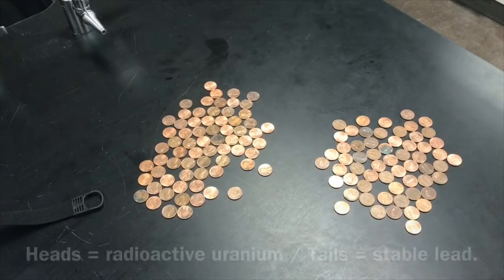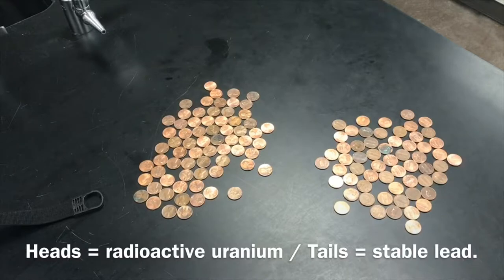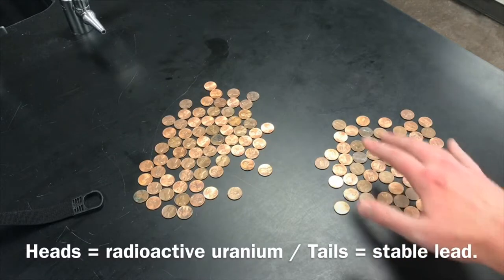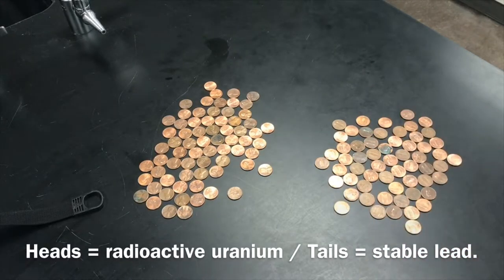We're going to say that heads is our uranium and tails are our pennies that have decayed into lead. I've separated my first pile into heads and tails. Heads represents the uranium that's left over, tails represents the uranium that's decayed into lead, so that is now stable.